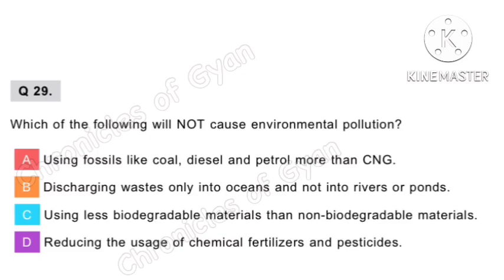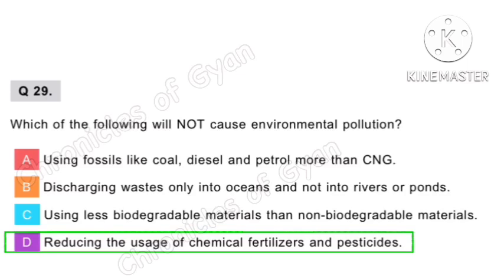Question 29. Which of the following will not cause environmental pollution? Option A: Using fossil fuels like coal, diesel and petrol more than CNG will cause a lot of air pollution — CNG is called green fuel as it emits zero smoke. Option B: Discharging waste into oceans will also cause water pollution. Option C: Using less biodegradable materials than non-biodegradable materials is also a source of pollution. Option D: Reducing the usage of chemical fertilizers and pesticides will reduce environmental pollution. So option D is the correct answer.